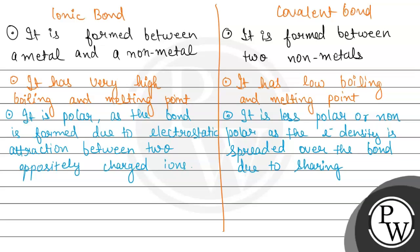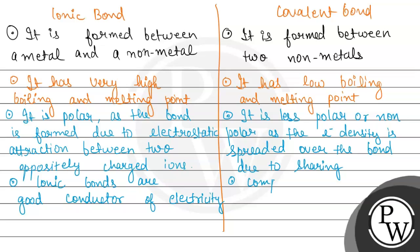Ionic bonds lead to the formation of ions, due to which ionic compounds are good conductors of electricity. Covalent bonds are comparatively bad conductors of electricity.